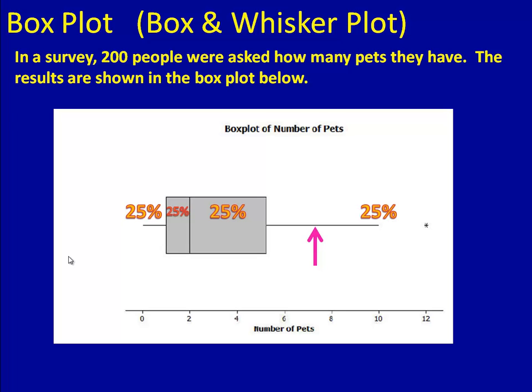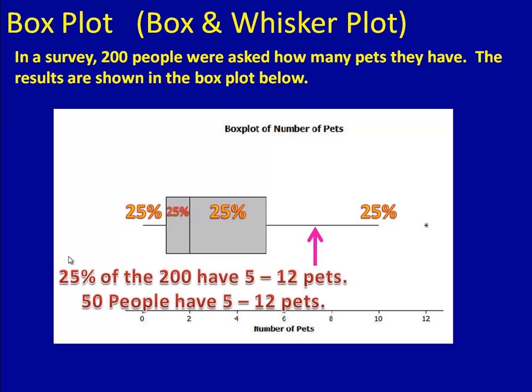Finally, we have our last interval. Again, 25% starts at 5, goes up to 12, 25% of those people or 50 have 5 to 12 pets. Notice this little asterisk off to the side. That's actually a piece of the graph. It actually goes in this last interval. What is that all about? Well, I'll tell you in a future lesson. Don't worry about that for now.